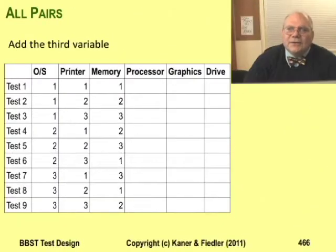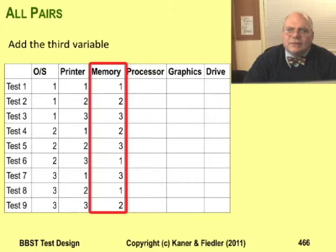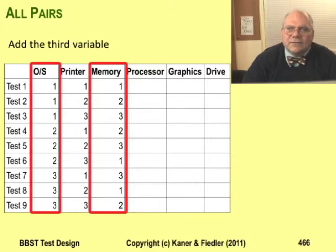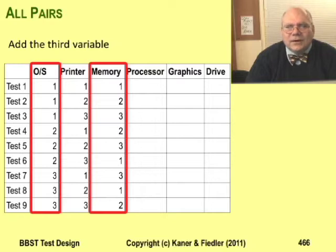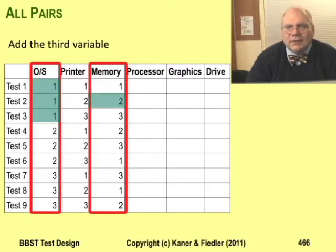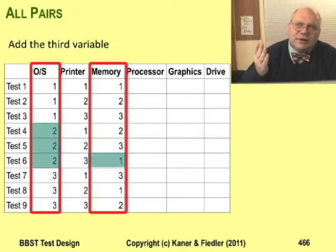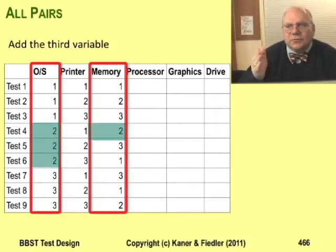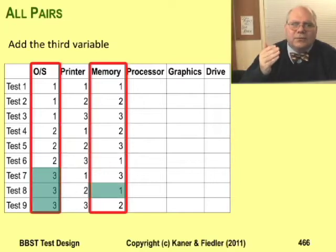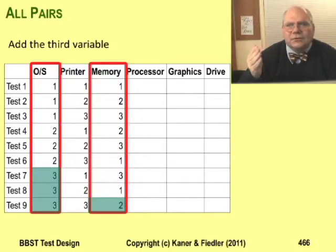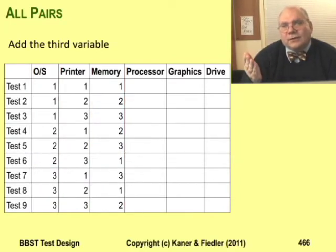Now add the third variable — the amount of memory. Start by checking the first column and the third column: operating system checked with memory. For this to be all pairs, there has to be a test of operating system one with memory one, one with two, one with three, OS two with one, two, and three, and OS three with one, two, and three. Those are there.